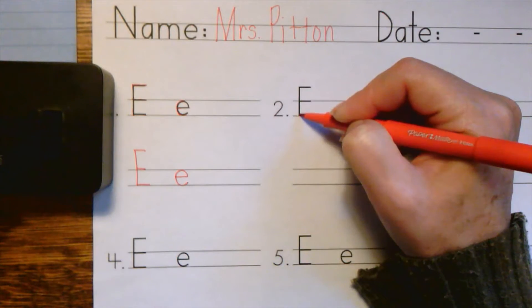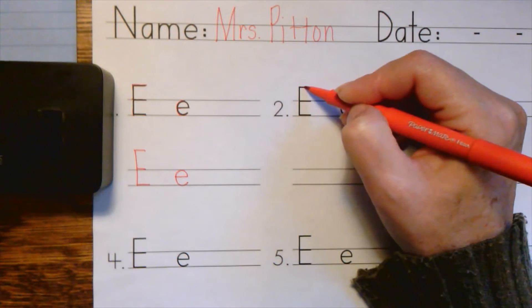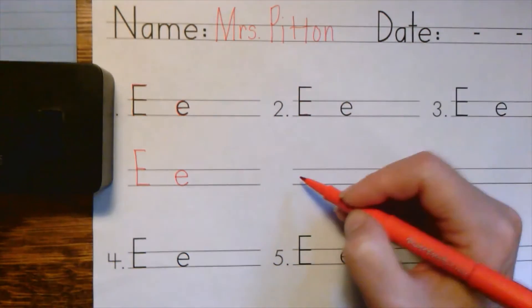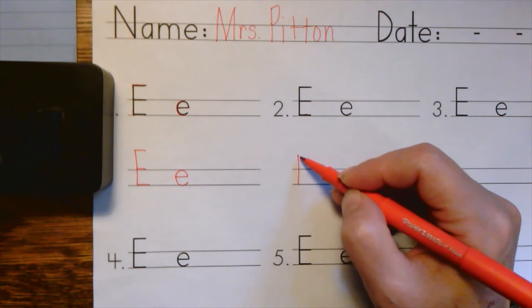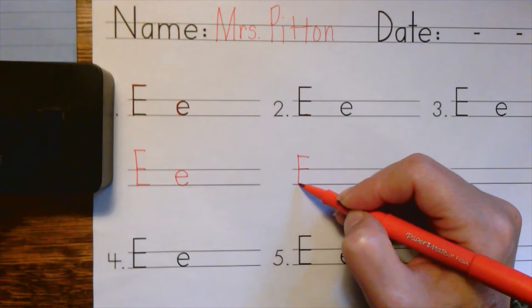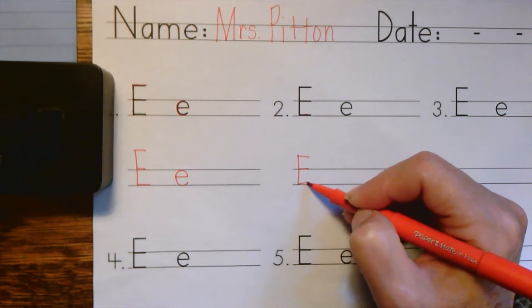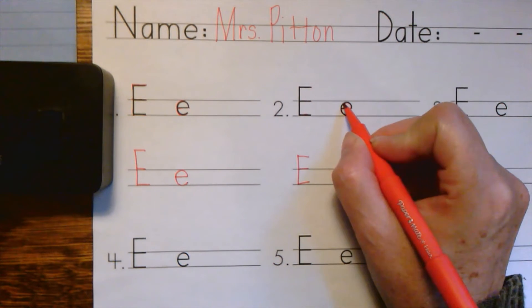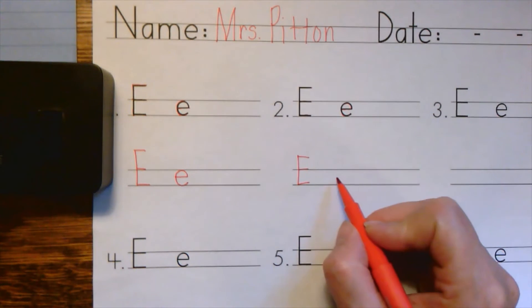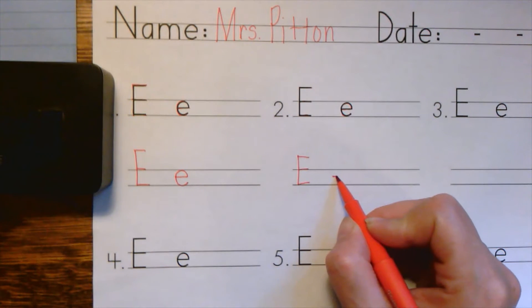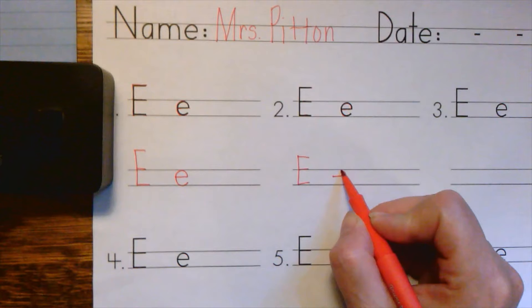Next one: big line down, frog jump, little line, jump, little line, jump, little line. And down here: big line down, jump, little line, jump, little line, jump, little line. Again here — lowercase e — hit the ball, run the bases, and down below, go about to middle, tiny bit up above middle, hit the ball, run the bases.